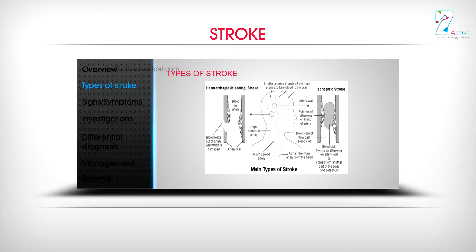A blood clot may form on the artery wall or come from another part of the body, such as the aorta — the main artery from the heart — and become stuck, blocking blood flow.